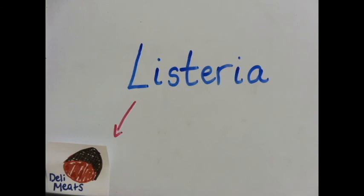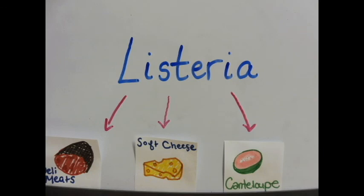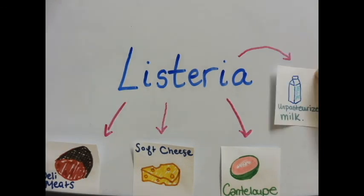Foods often implicated with Listeria monocytogenes include unpasteurized milk, soft cheese, cantaloupe, deli meats, refrigerated pate, refrigerated smoked seafood, lettuce, and many more.